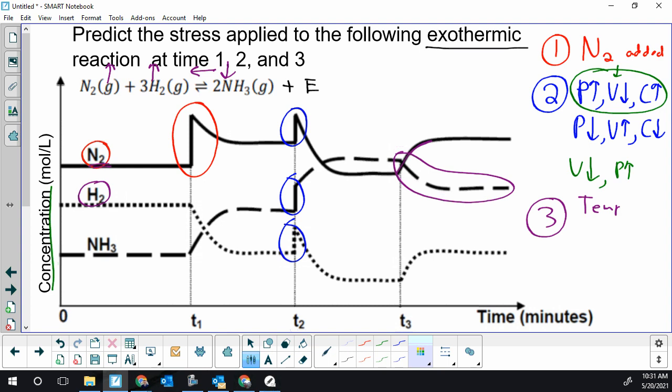So what would cause that shift? We're also going to realize that if ammonia went down, the energy must have went down. So what would cause energy to go down?